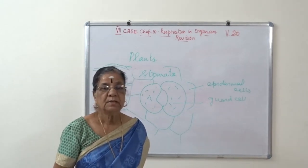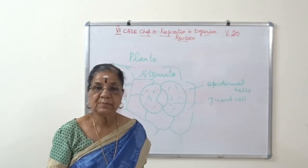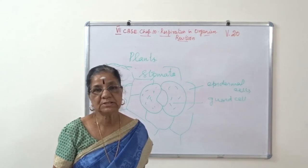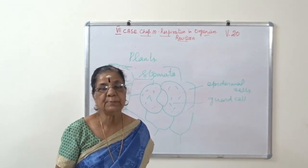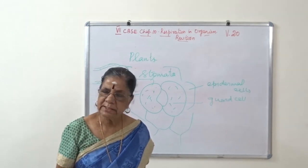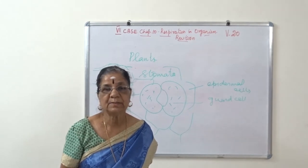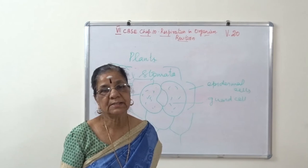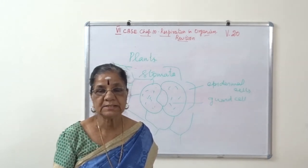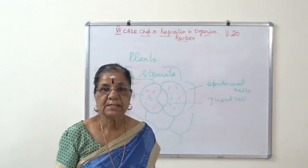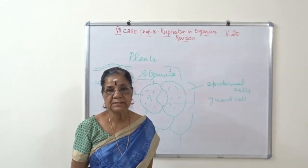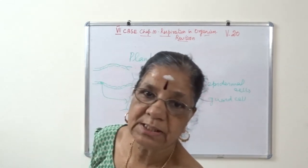In plants, during respiration, oxygen is taken in. At the same time, during photosynthesis, oxygen is released. That released oxygen can also be taken by the green plants for respiration. Photosynthesis occurs mainly during the day, so when plants use that oxygen for respiration, it is called photorespiration.